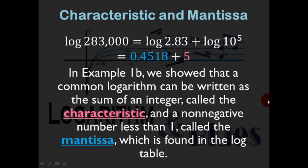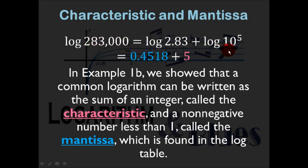Two vocabulary words: characteristic and mantissa. The characteristic is the integer part of the log — it comes from the power of 10 in scientific notation, and it can be zero, negative, or positive. The mantissa is the non-negative decimal part between 0 and 1, which you look up in the table. These words probably won't be on your quiz, but you should know what they mean.